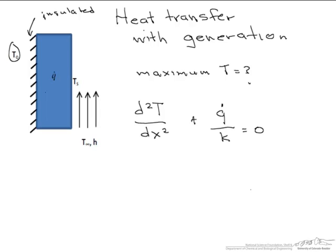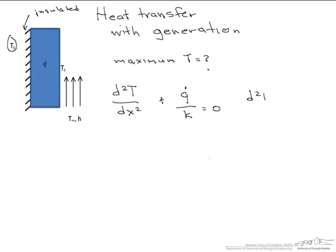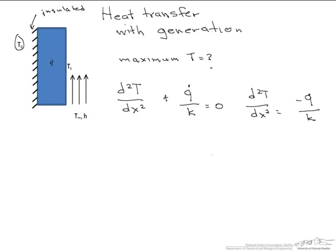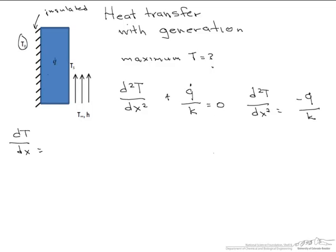Or we can write that d squared T dx squared equals minus Q dot over k. Let's integrate this twice. First we have dT dx equals minus Q dot over k times x plus our first constant. And we integrate it again to get our temperature distribution, which is minus Q dot over 2k times x squared plus C1 x plus C2.